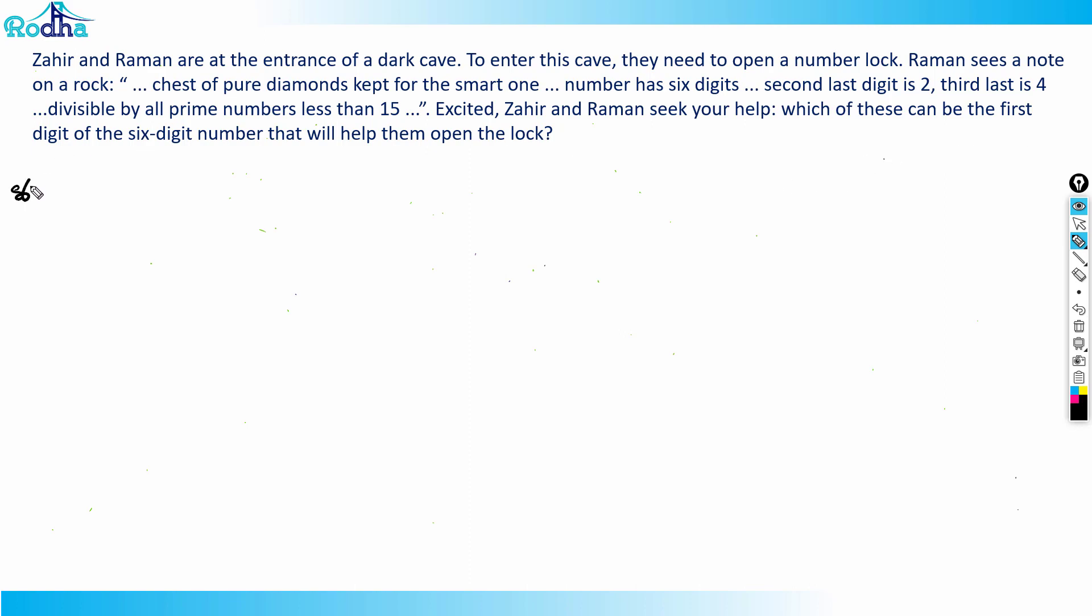This question says that it is divisible by all the prime numbers less than 15. So that means the number is divisible by 2, 3, 5, 7, 11, and 13. The number is divisible by all these six.